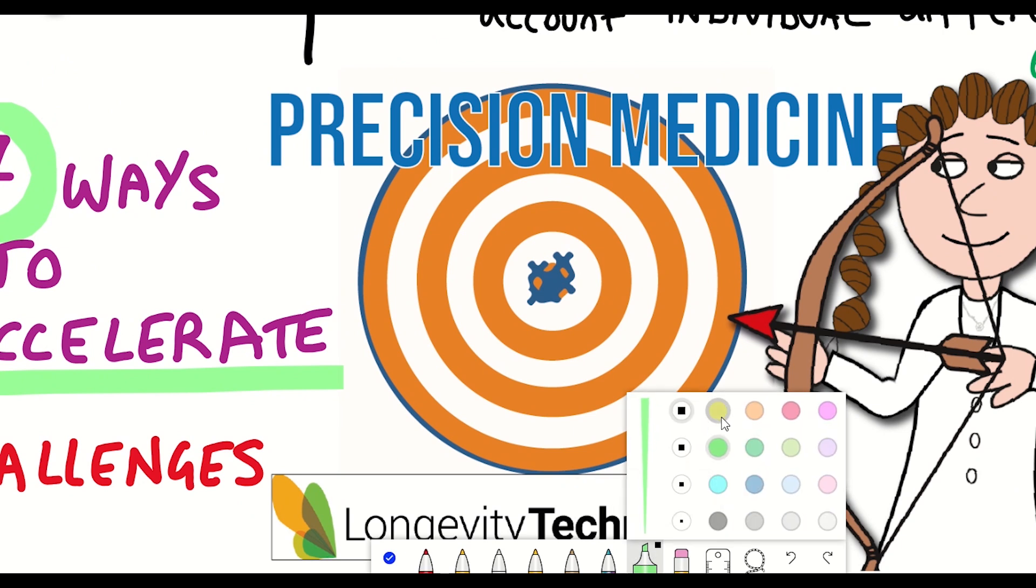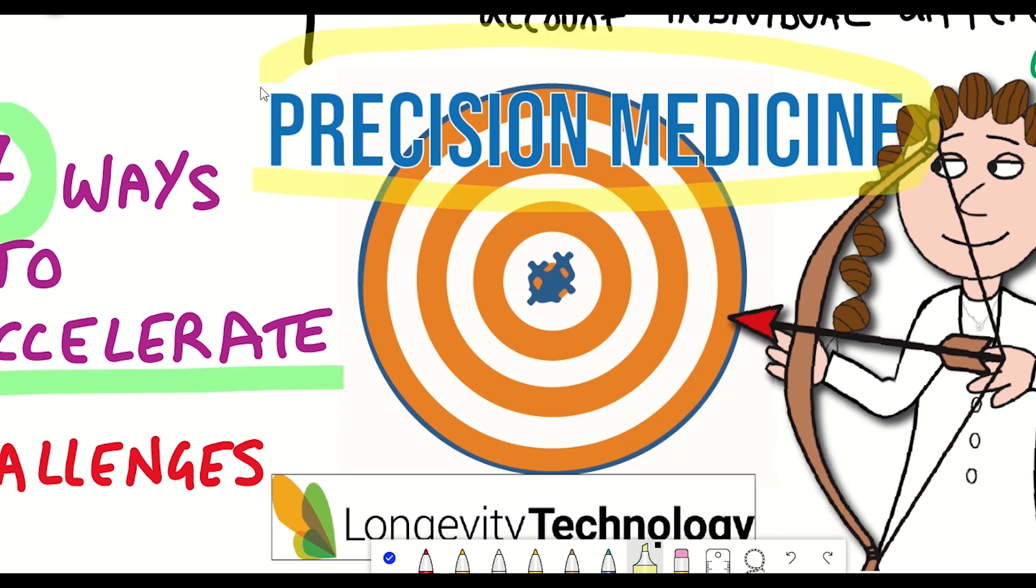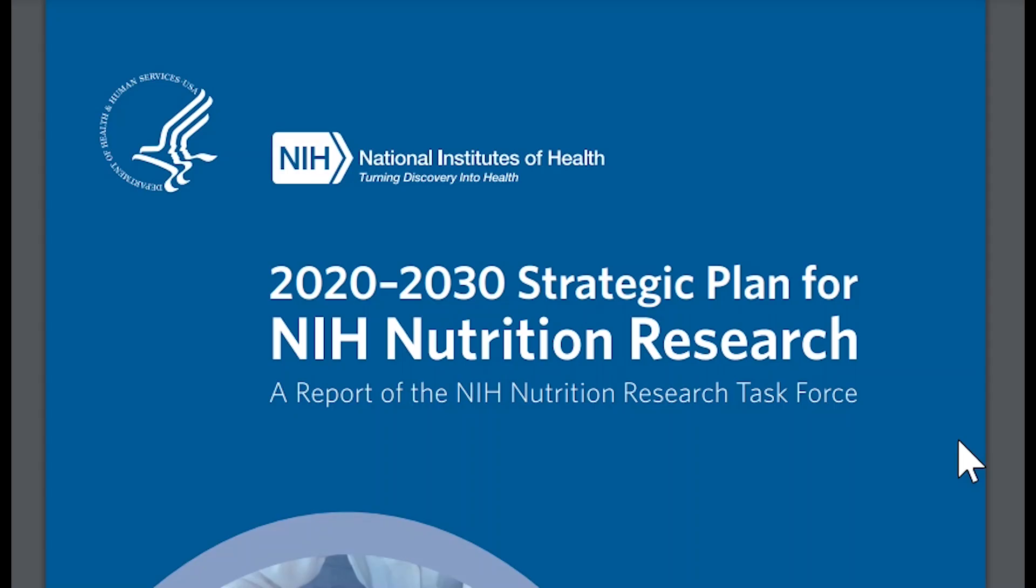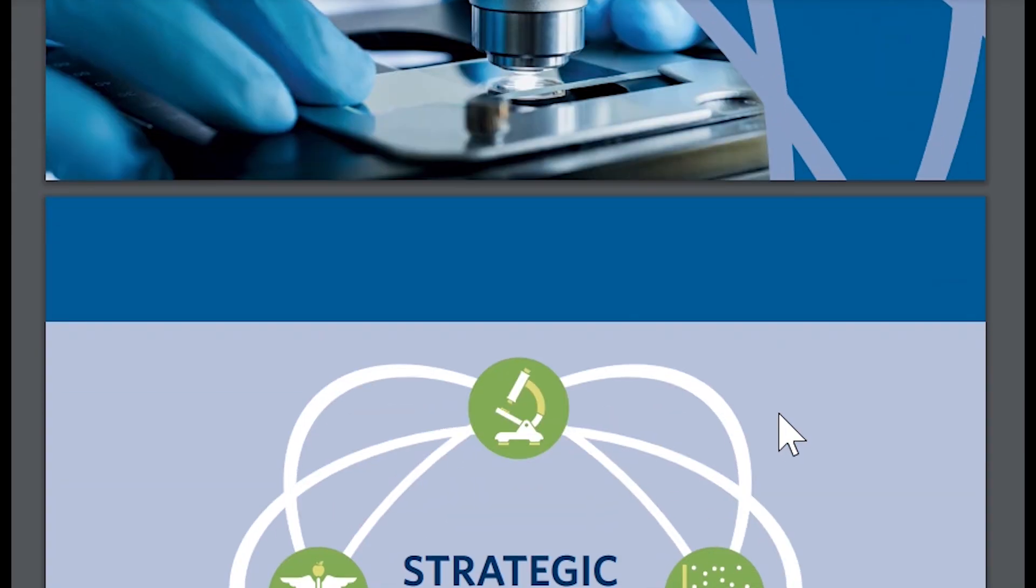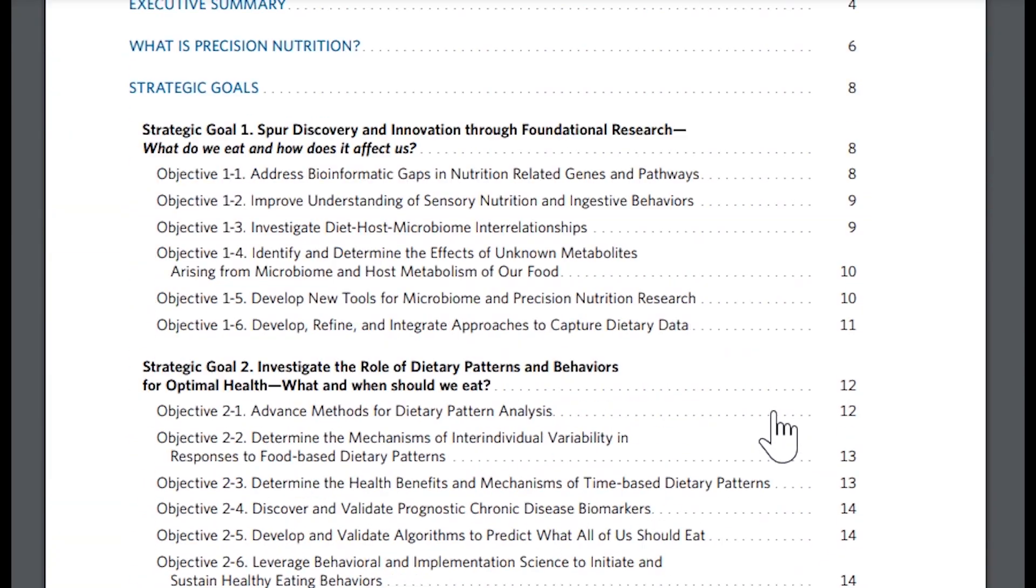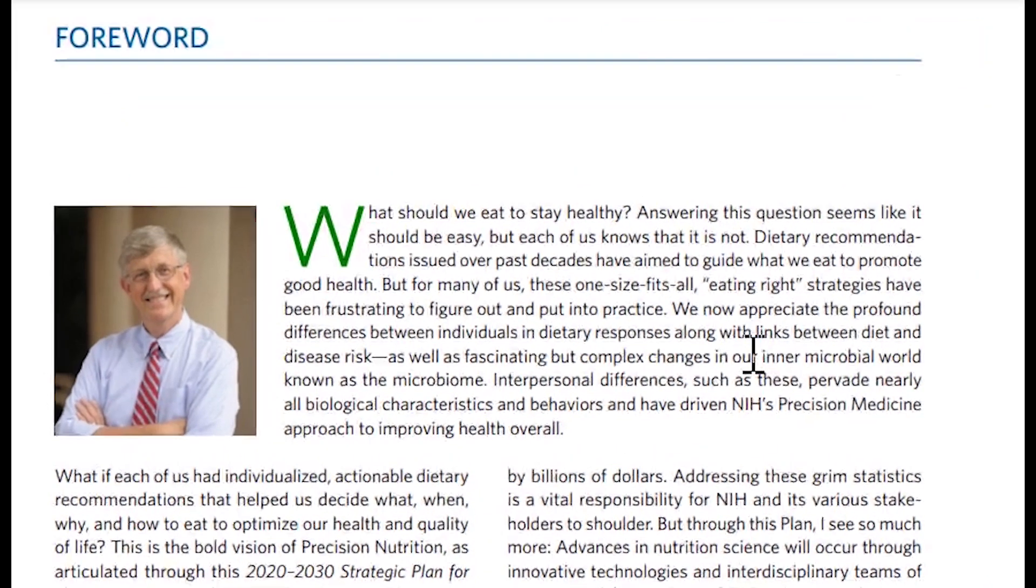So first then, what is precision medicine? Well, it will help to give an example. Last year, the National Institutes of Health Nutrition Research Taskforce announced that they had initiated a strategic plan for 2030 for achieving precision nutrition. And this is the idea that answering the question, what should we eat to stay healthy, is not a very simple question to answer. And this is because the answer is not a one size fits all.